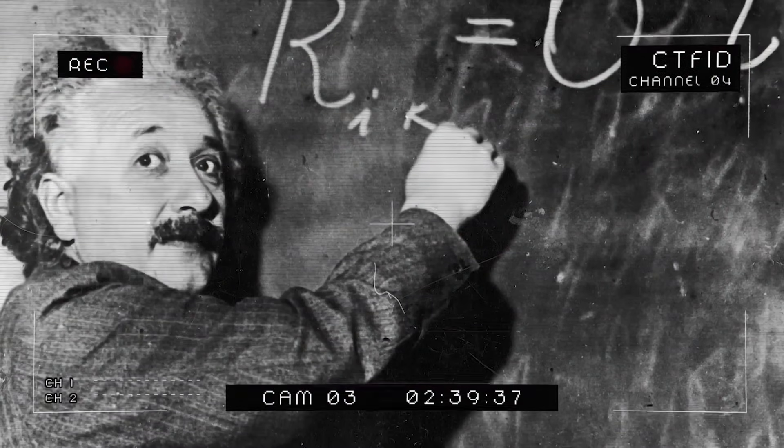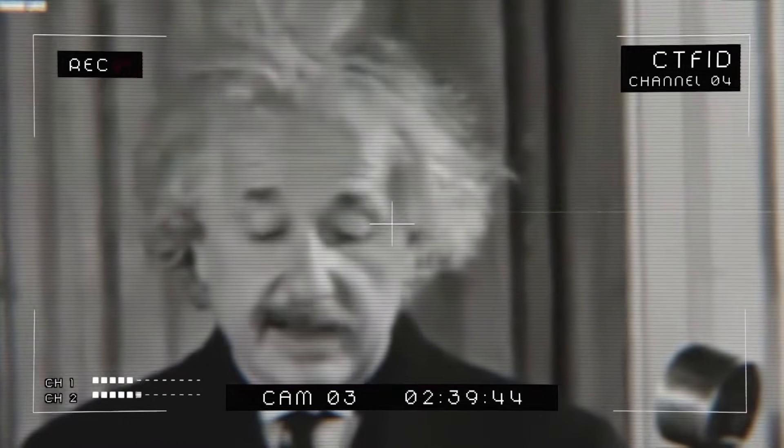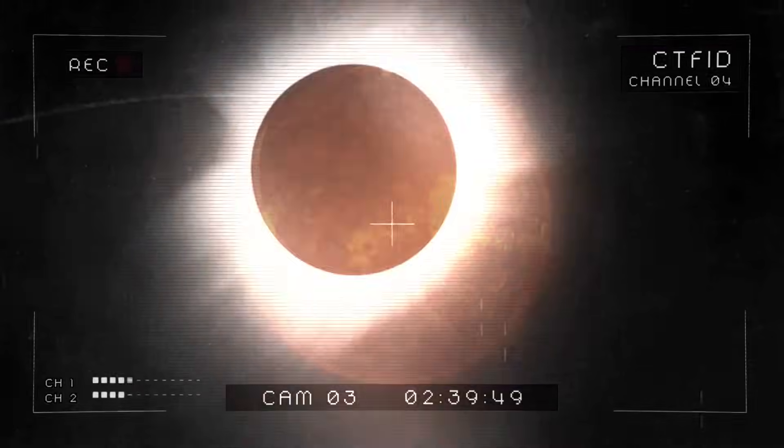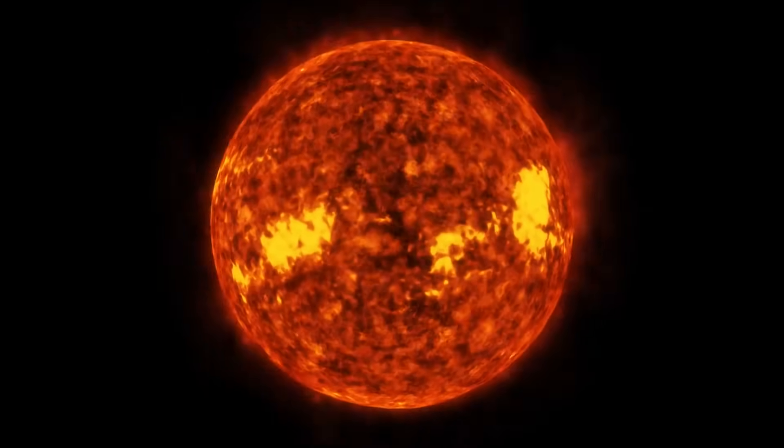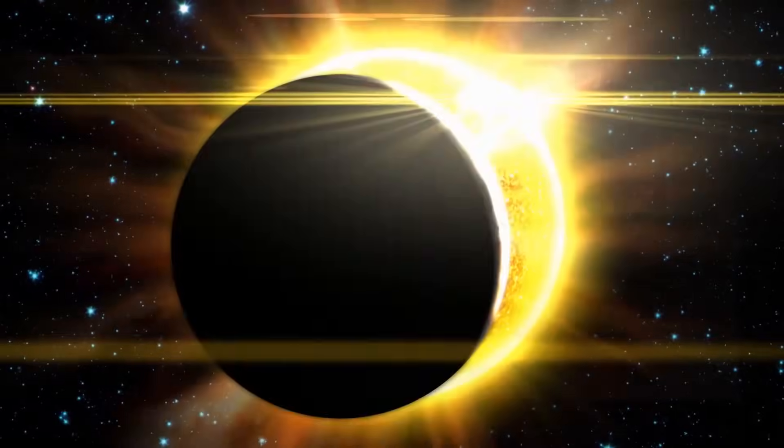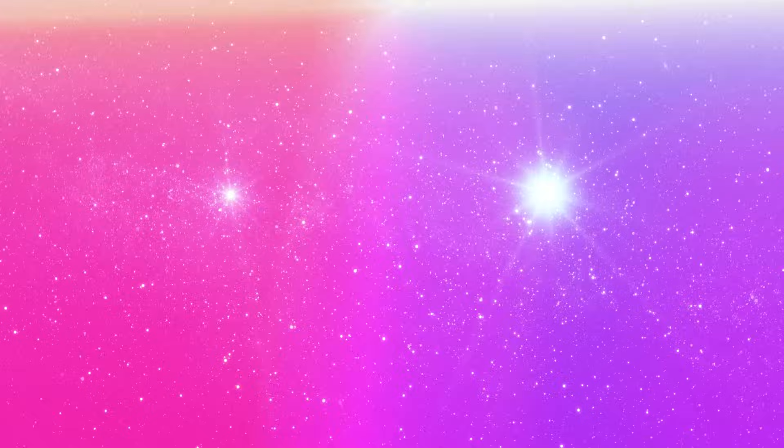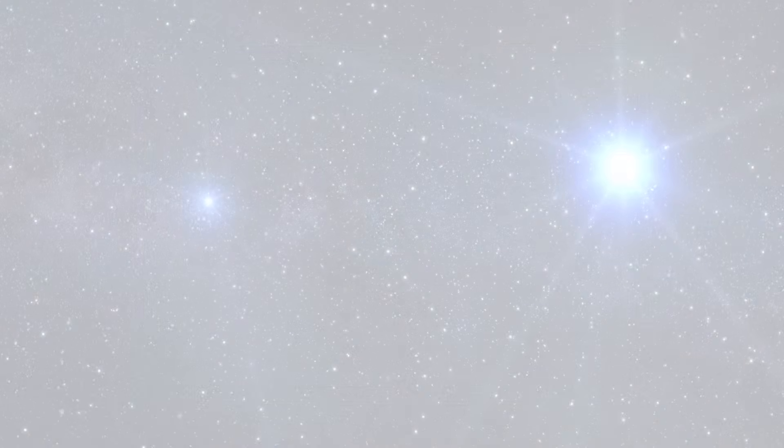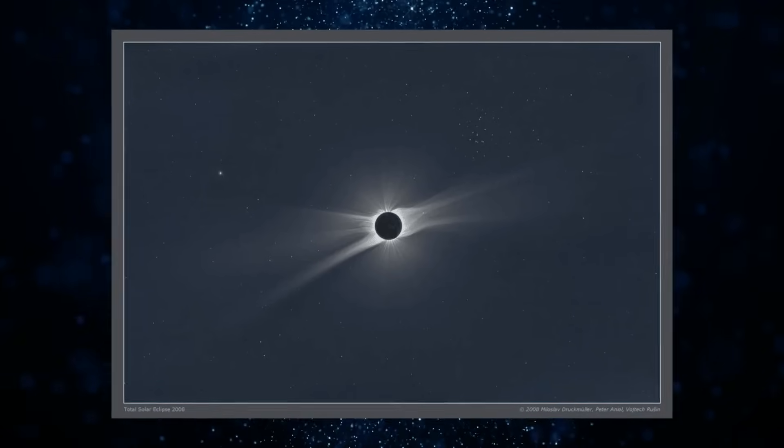Einstein presented his general theory of relativity at the end of 1915 in a series of lectures in Berlin. But it wasn't until a solar eclipse in 1919 that everyone took notice. His theory predicted that a massive object, say, the sun, could distort space-time nearby enough to bend light from its straight-line course. Distant stars would thus appear not exactly where expected. Photographs taken during the eclipse verified that the position shift matched Einstein's prediction.